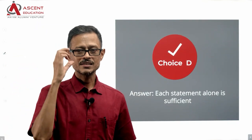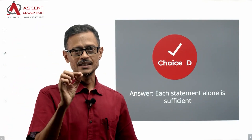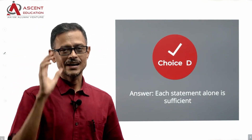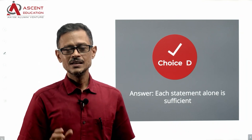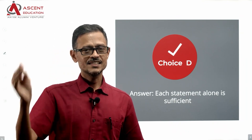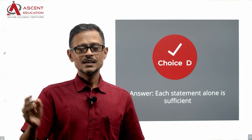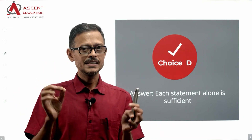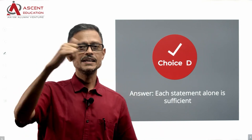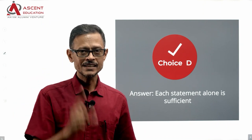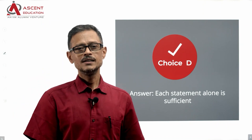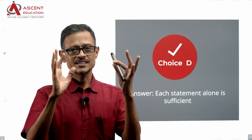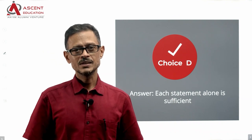So the important key learnings from this question: in a yes-or-no type question, if A is greater than B and you multiply by a positive number, the inequality holds — 2A is greater than 2B. But if you multiply by a negative number, the inequality flips — minus 2A will be less than minus 2B. These are the key learnings from this particular question. Best wishes for your exam preparation.